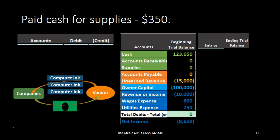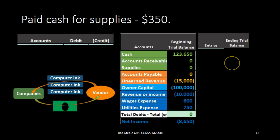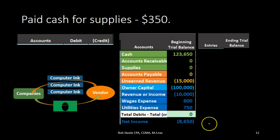In this lecture we're going to record the payment of cash for supplies. We'll record the journal entry up here on the left-hand side, then record it to the trial balance to see the effect on our accounts — assets in green, liabilities in orange, equity in light blue, revenue and expenses in darker blue, and net income as revenue minus expenses.